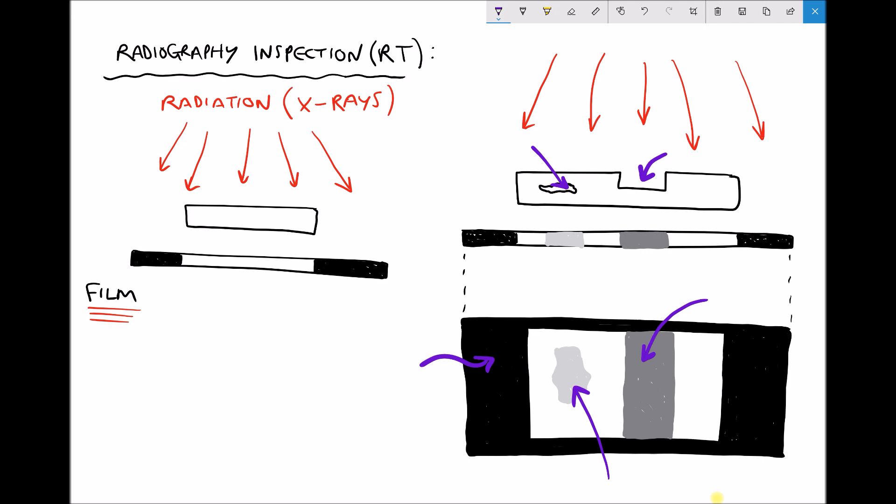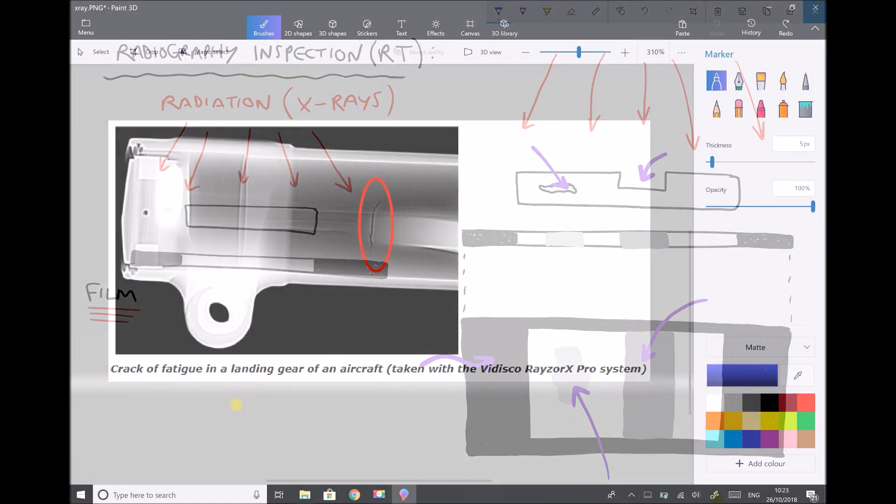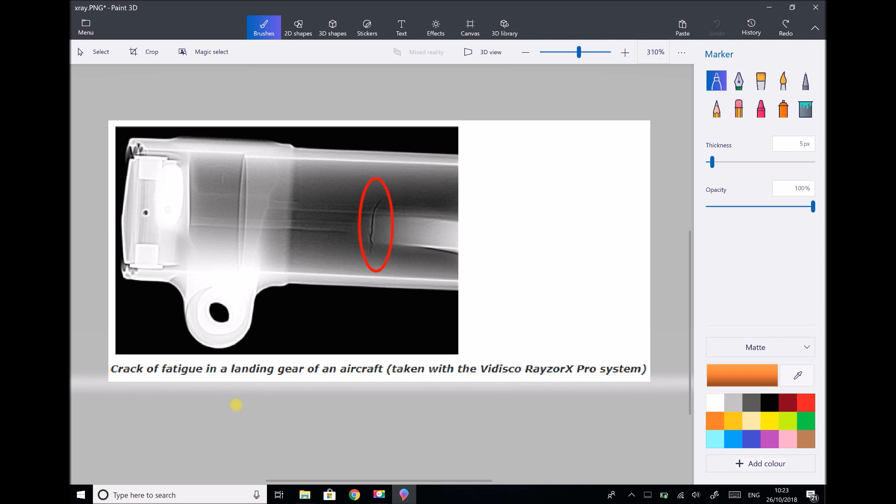So let's take a look at the types of results that this test would actually generate. So here we have an example of an x-ray that's been taken of the landing gear of an aircraft. And what we noticed circled is a crack in that component. And as it mentions below that's actually a fatigue crack in that component.